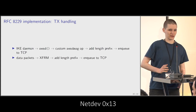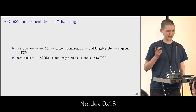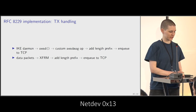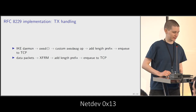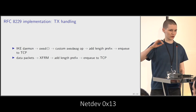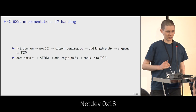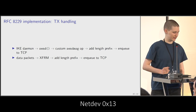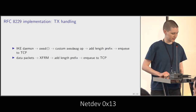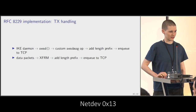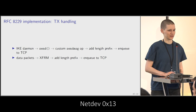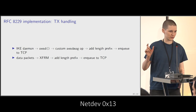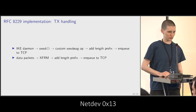On the transmit side, there are two sources of messages. The IKE daemon uses the send syscall as it would on a UDP socket — almost entirely transparent. In the kernel, invoking the send syscall calls the send message implementation, which adds the length prefix and enqueues the message to the TCP socket. Otherwise, data packets from the IP stack go through XFRM, get transformed into ESP messages, have the length prefix added in front, and are also enqueued to the TCP socket.